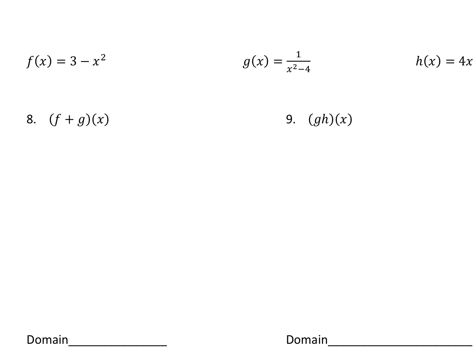Next we have combinations of functions. For problem 8, we're adding f plus g. Take the f function and add it to g: (3 minus x squared) plus (1 over x squared minus 4). If you have like terms, combine them, but otherwise you don't need to simplify further. For combination functions, check the domains of both functions involved — the domain of the combination is the overlap of those two domains.